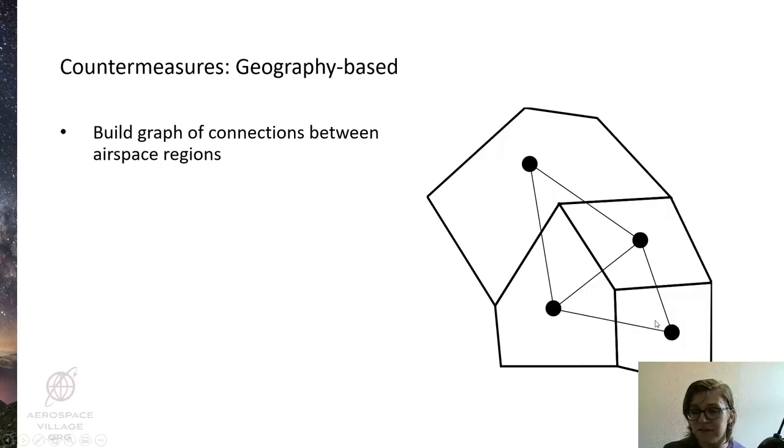The first of these countermeasures involves building a graph of connections between the airspace regions, so this diagram on the right represents a potential map of adjacent airspace regions. We draw an edge on the graph whenever airspaces are adjacent to one another, so it's feasible for an aircraft to hand over between those two airspaces. Whenever the aircraft receives a message instructing it to hand over between airspace regions, it checks it against the graph.